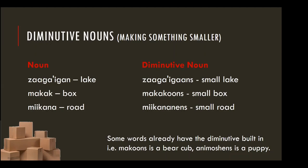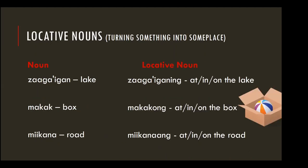It's the same thing with locative nouns — you can turn a noun into a place. Zaga'igan is a lake; zaga'igan is at, in, or on the lake, and whether you're at, in, or on the lake depends on what you're doing. If you're not sure which locative ending to use, look at the Ojibwe People's Dictionary — unless you have a fluent speaker nearby, in which case always ask them first.